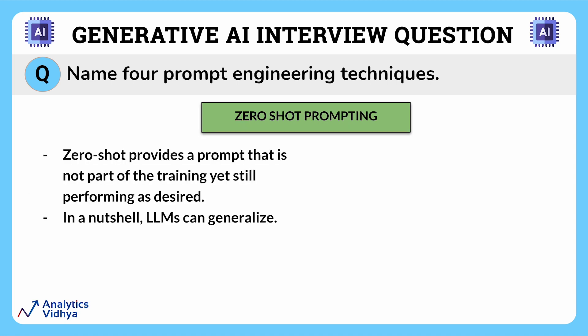First is zero-shot prompting. It is a prompting technique that involves generating text without any training on the specific task at hand. Instead, the generative AI system uses a pre-existing language model trained on diverse tasks to generate text for a new task without additional training or fine-tuning. Zero-shot prompting allows for quick and easy adaptation to new tasks without requiring large amounts of task-specific training data.